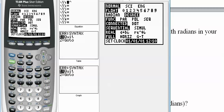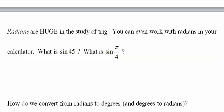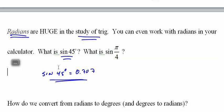Hit mode, go down and put it in radians, and sine of π divided by 4 gives you the same answer. So both of these give you 0.707.